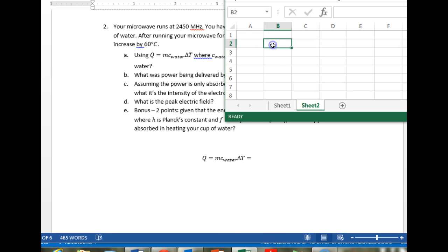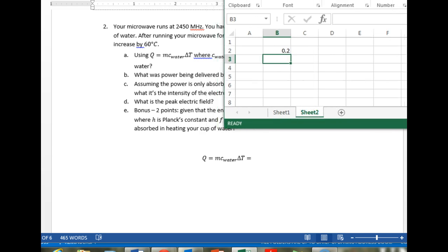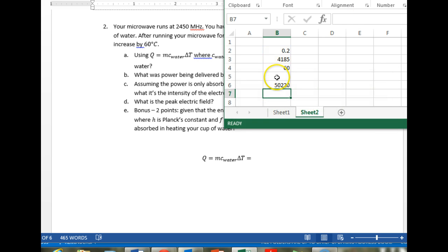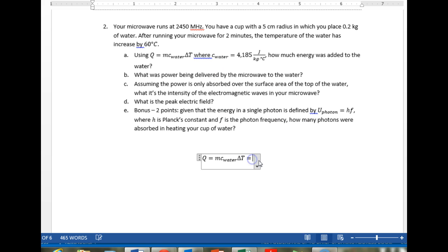Let's pop over to Excel. We've got 0.2 kilos, 4185 joules per kilogram degrees C for the specific heat of water, and 60 degrees C as the delta. So the total heat added is just the product of these three. Yes, there is a typo there. So 50 kilojoules, 50.2 kilojoules.